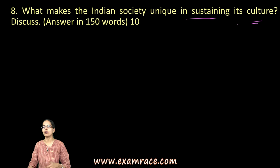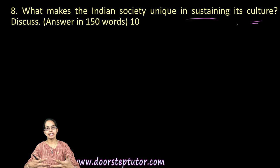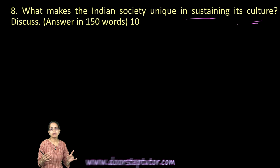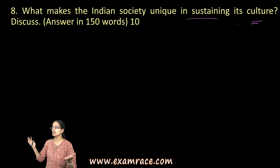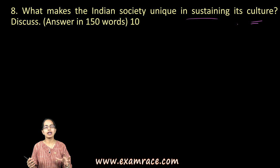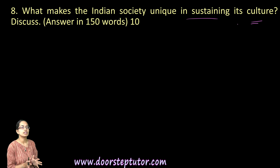The next question states that Indian society is unique in sustaining its own culture. This holds true because India has a cosmic vision, cultural integrity, and is a secular nation with stability and continued development. The caste system is gradually diminishing, and accommodation and assimilation of various cultures reflects unity in diversity — these are the key points to highlight in your answer.